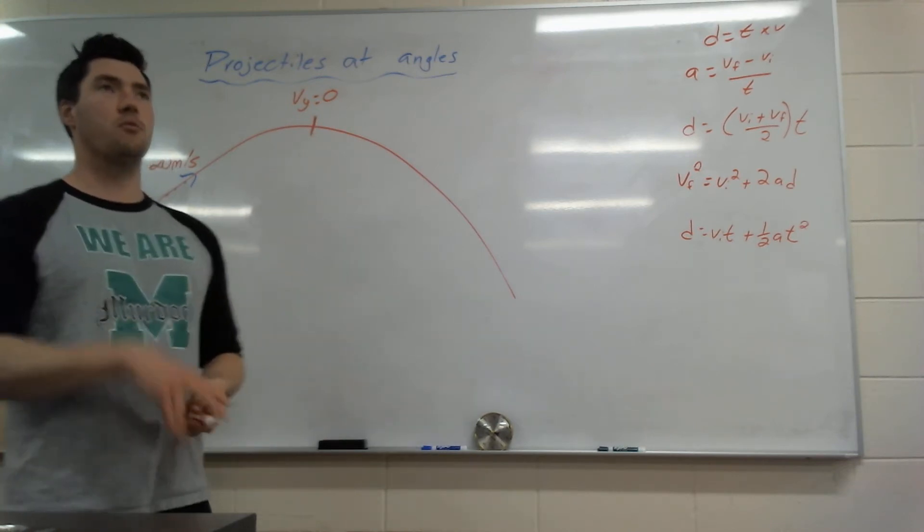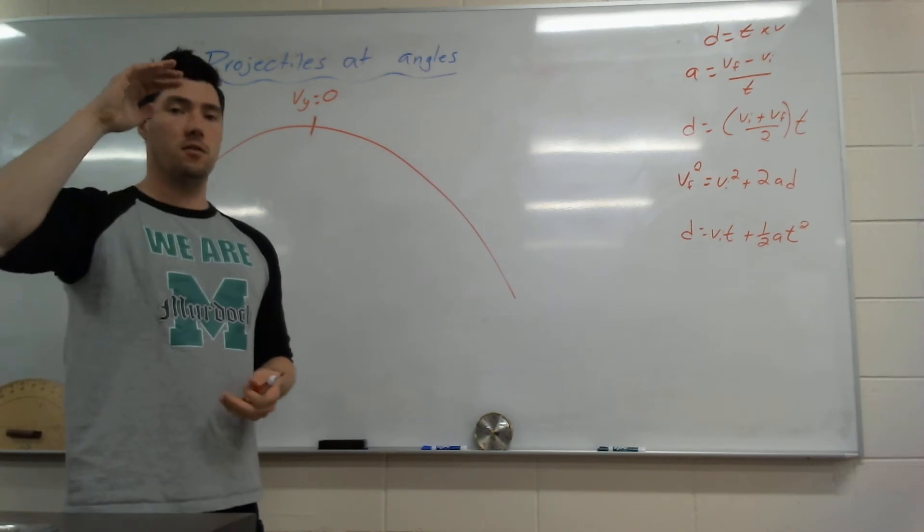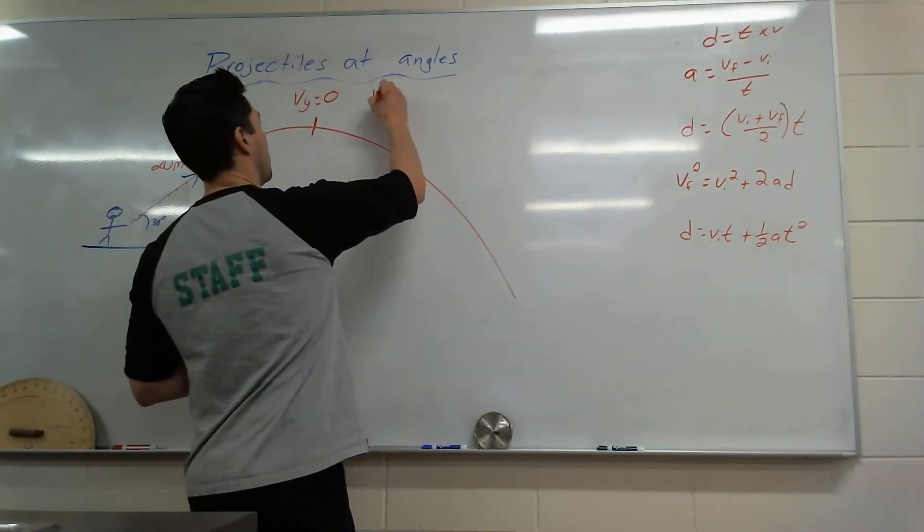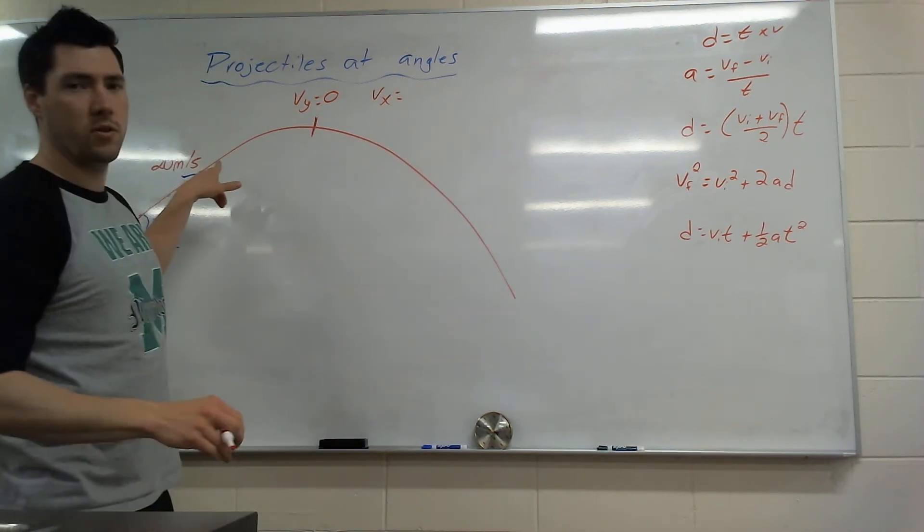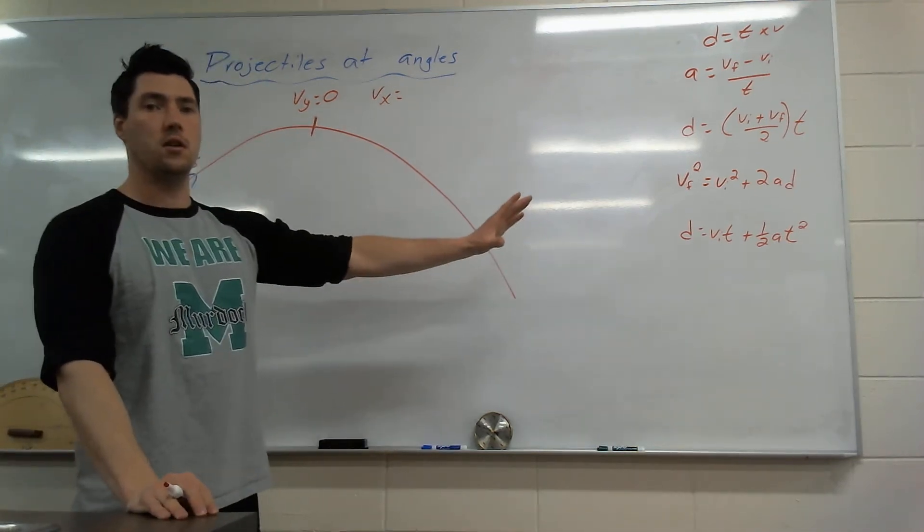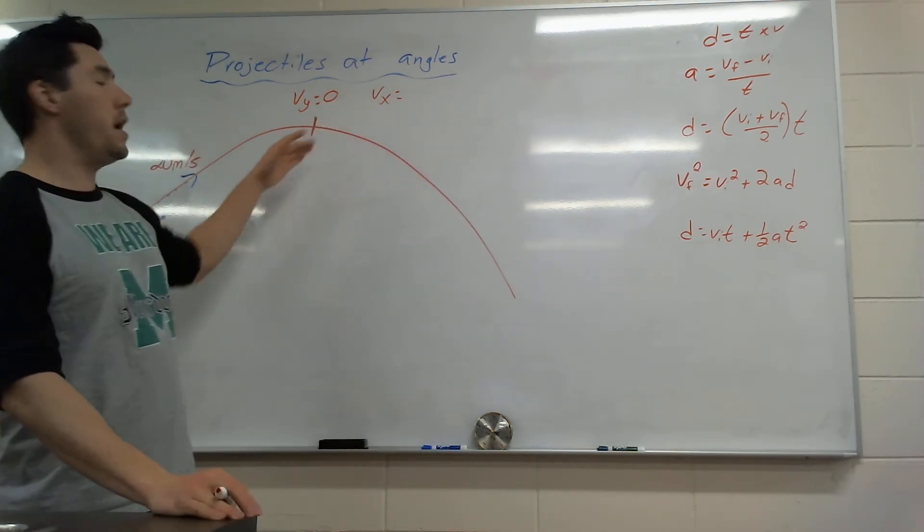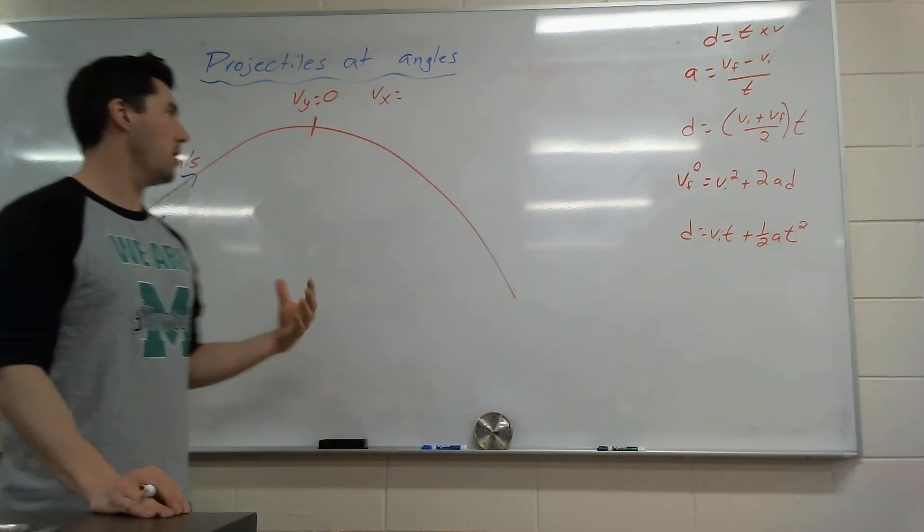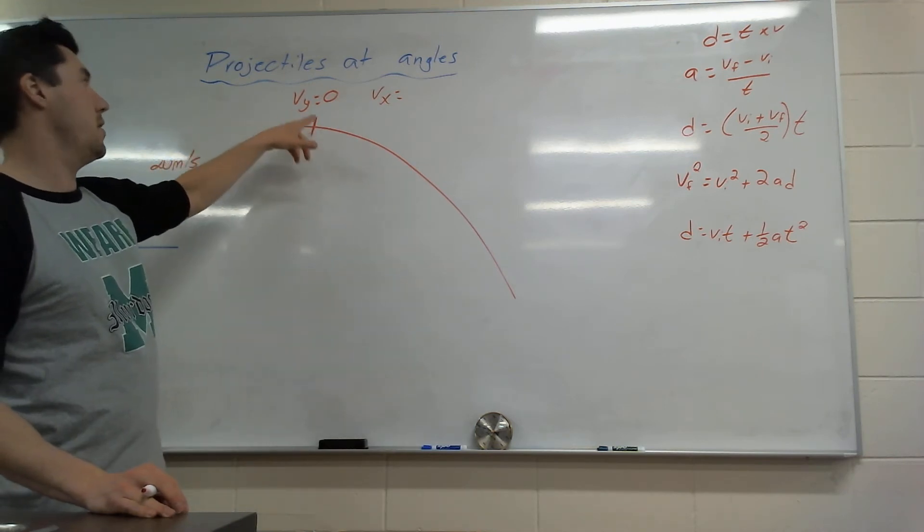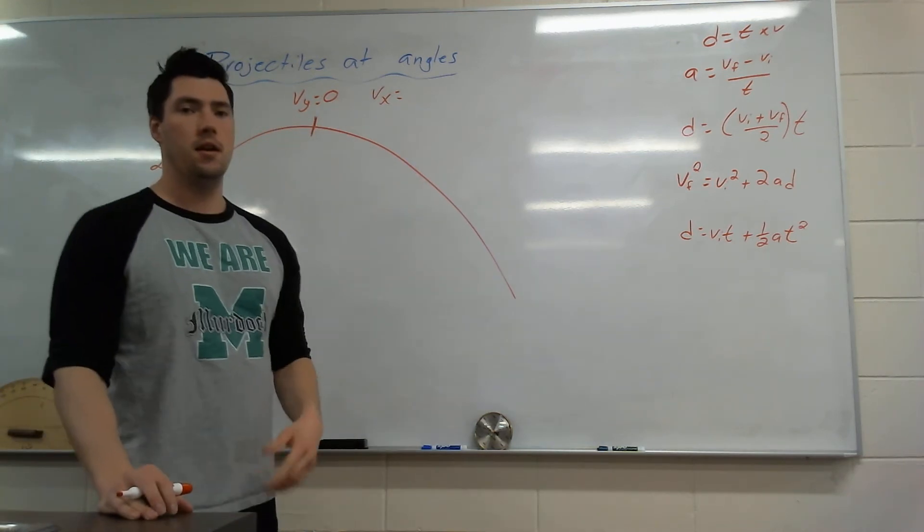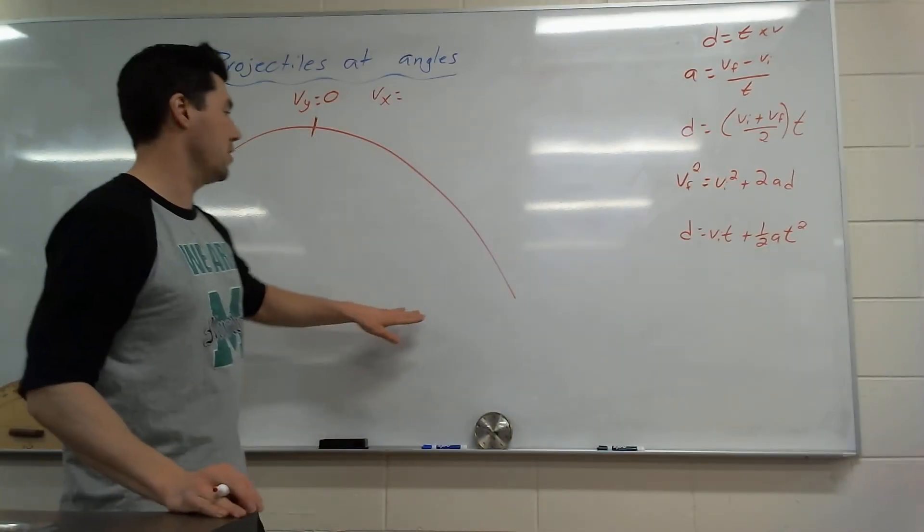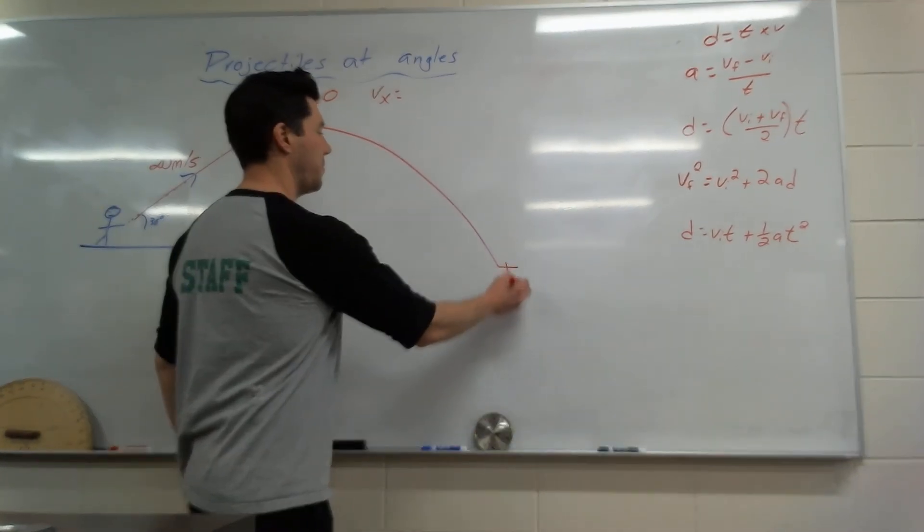Because you can imagine, anytime you throw something up, the Vx is going to be constant, we talked about that last week. That Vx is going to be constant throughout the whole thing, so that's not going to change. But the Vy is going to consistently keep changing. It's going to be positive here, and then it's going to get to zero, and then it's going to be negative on this side. And it's going to keep getting more and more negative as you go. And eventually until it lands, let's say it lands right here.